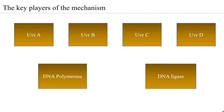The key players of the mechanism are UVR-A, UVR-B, UVR-C, and UVR-D. These molecules are named UVR because when they were discovered, they were found to be associated with damages caused by exposure to UV radiation. Of course, one also has DNA polymerase and DNA ligase, because this mechanism involves the removal of nucleotides and replacing them with new nucleotides.